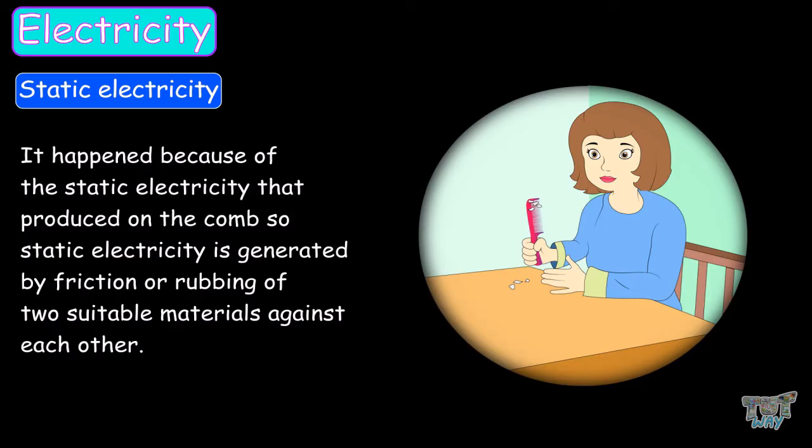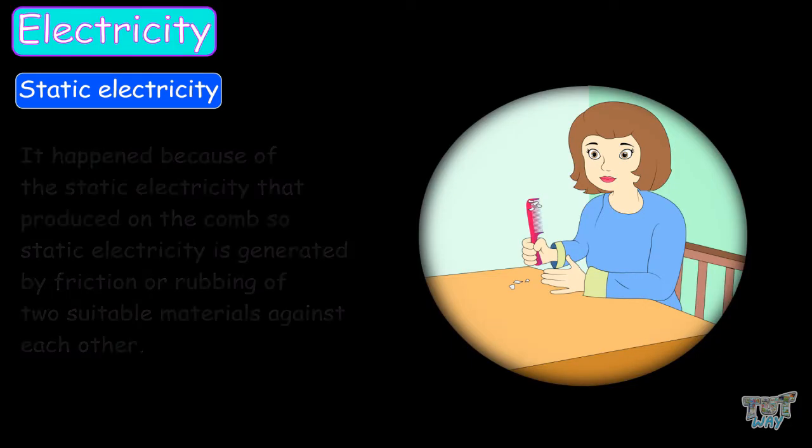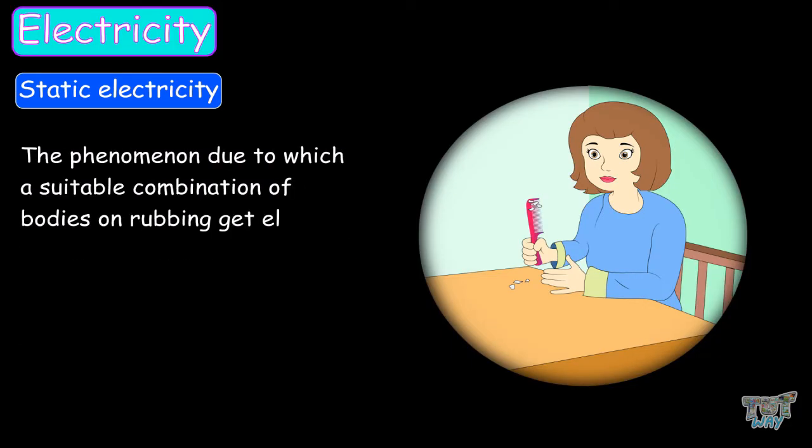So static electricity is generated by friction, or rubbing, of two suitable materials against each other. And this phenomenon, where two suitable combinations of bodies are rubbed together to get electrified, is called electrification.